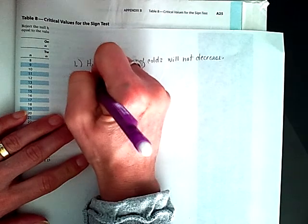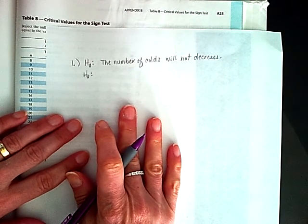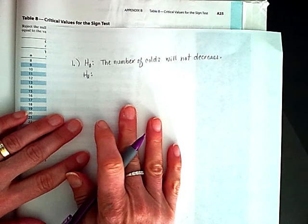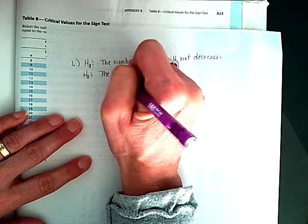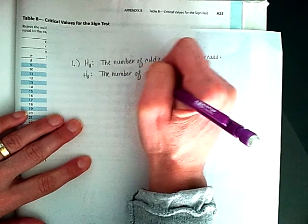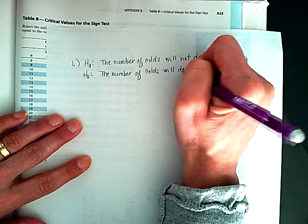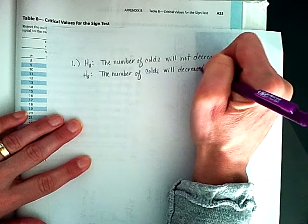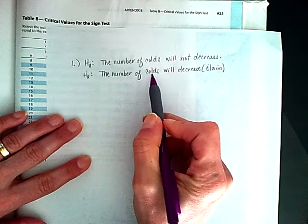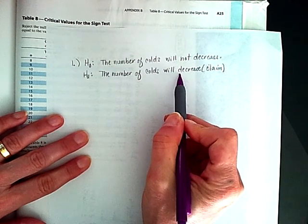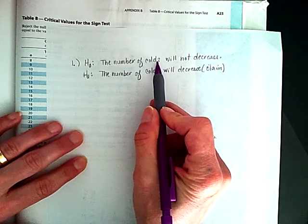And my alternative hypothesis is going to say the new vaccine will decrease the number of colds. So the number of colds will decrease, get smaller, and that is my claim. So this is meaning that my numbers are going to get smaller. This is going to mean that they're going to be greater than or equal to.